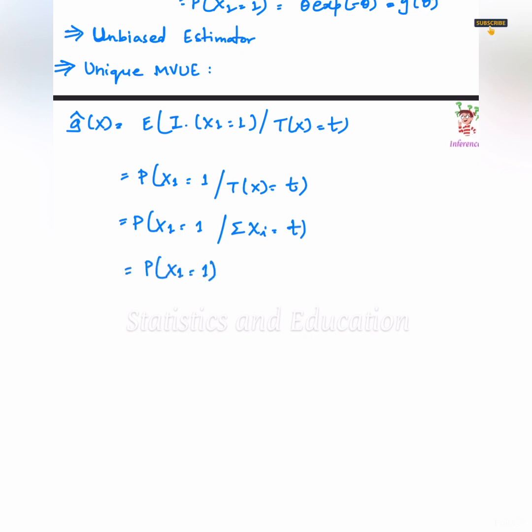So, what will be the value of x1? x1 will be 1 and summation i goes from 2 to n will be t minus 1. Why? See, when we expand the probability x1 equals to 1 given summation xi equals to t, and we consider the numerator, probability x1 equals to 1, intersection summation i goes from 1 to n, xi equals to t.